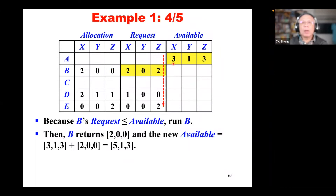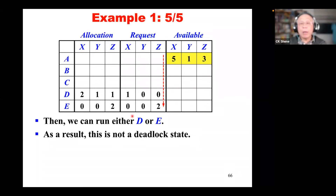Please compare this detection algorithm with the safety algorithm — they are very similar. Instead of working with the need array, we use request. Now let's take a look at an example. Suppose currently we have an allocation table and a request table, and currently nothing is available. If you sum the column for each resource type X, Y, Z, that gives the maximum available for each resource, since nothing is currently free.